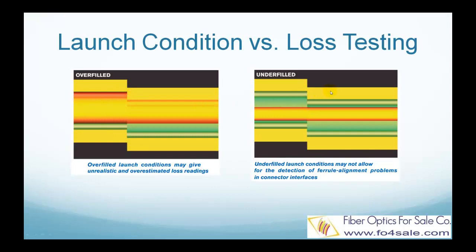Now let's see what happens if the launch condition is too much underfilled, as shown in the second picture. If the launch condition is too restrictive, only very few lower order modes near the center of the core are excited. So the light beam passes through the misaligned connectors with very low loss, probably 0.2 dB. Again, this gives a misleading loss, which is underestimated.